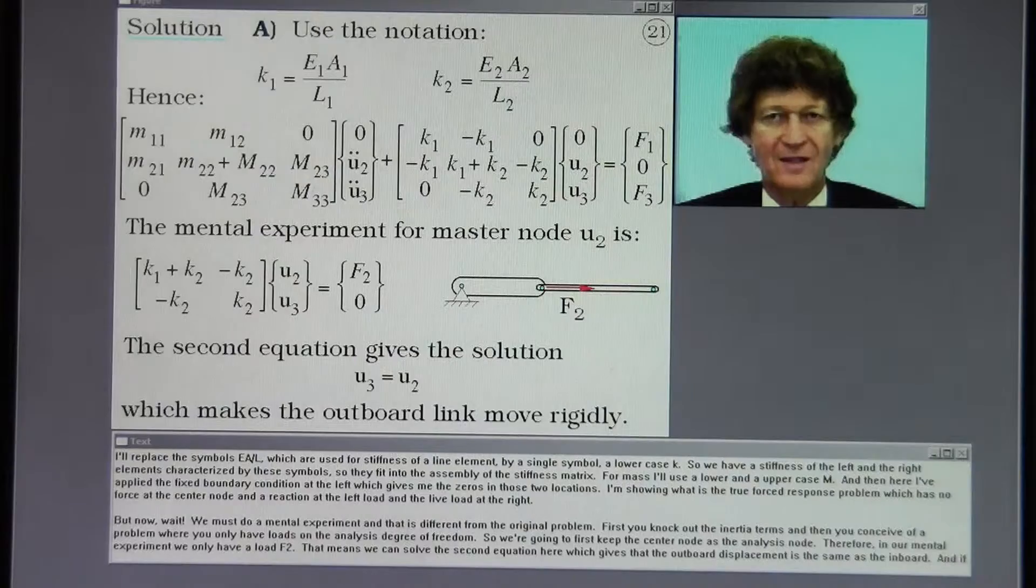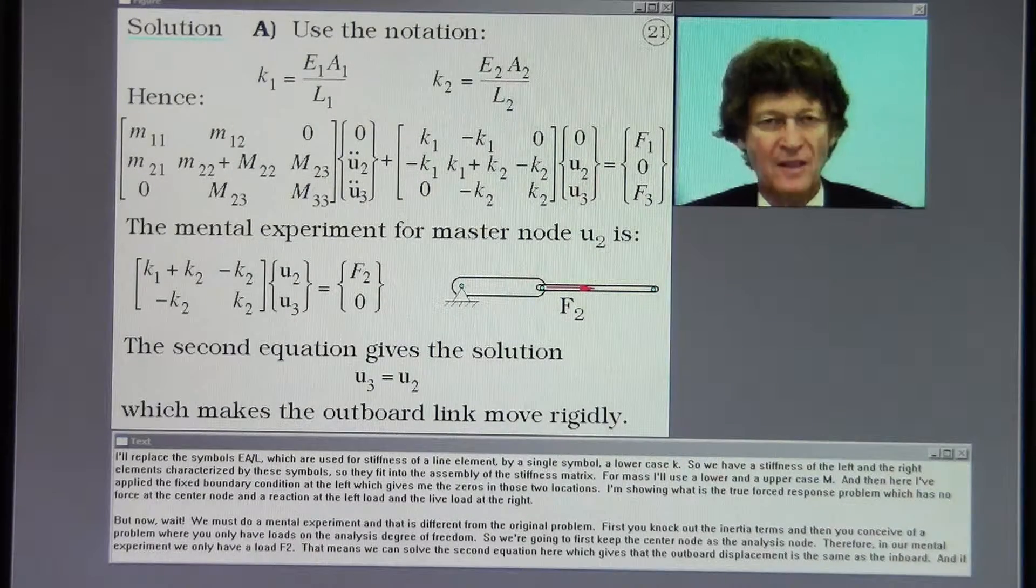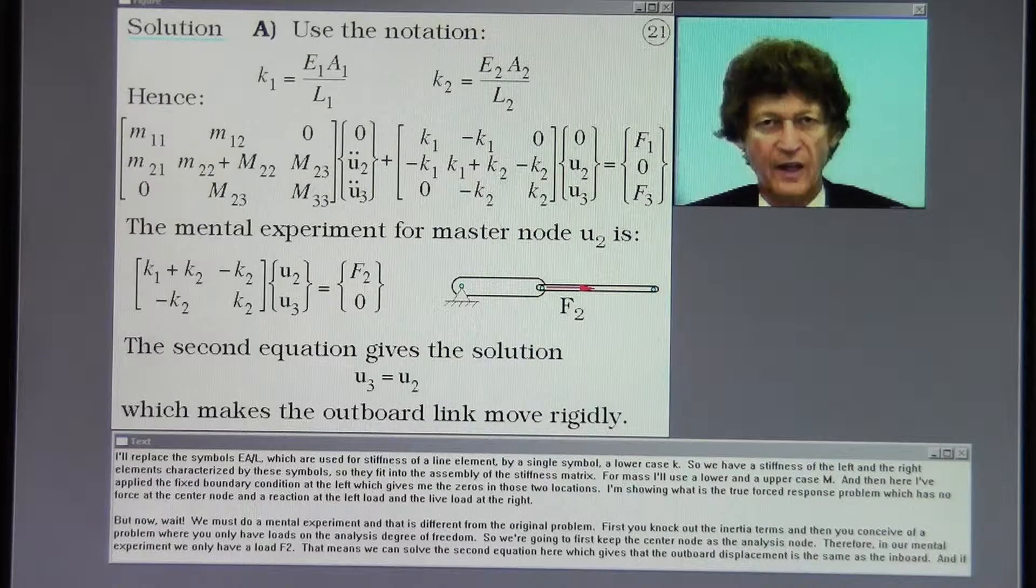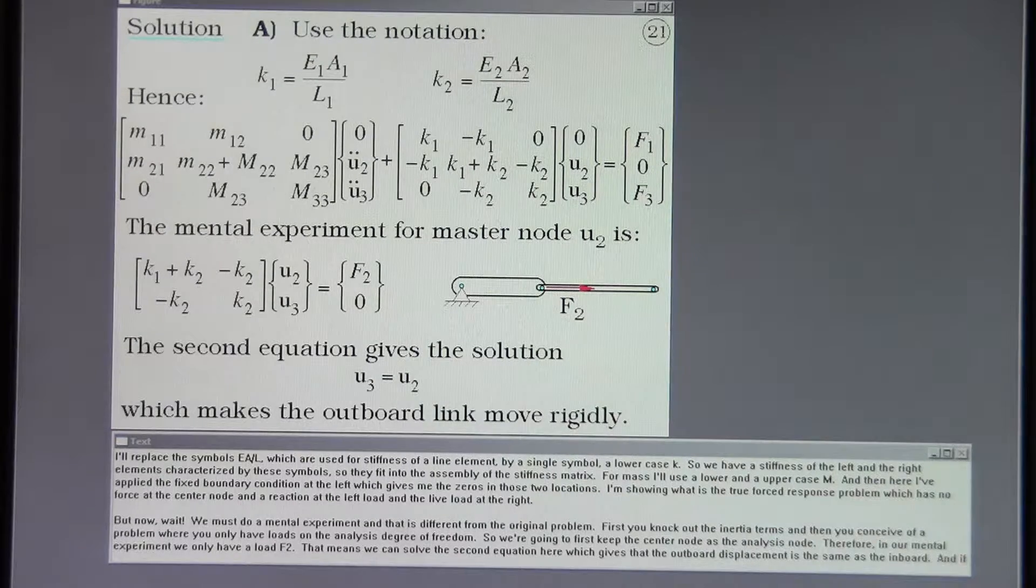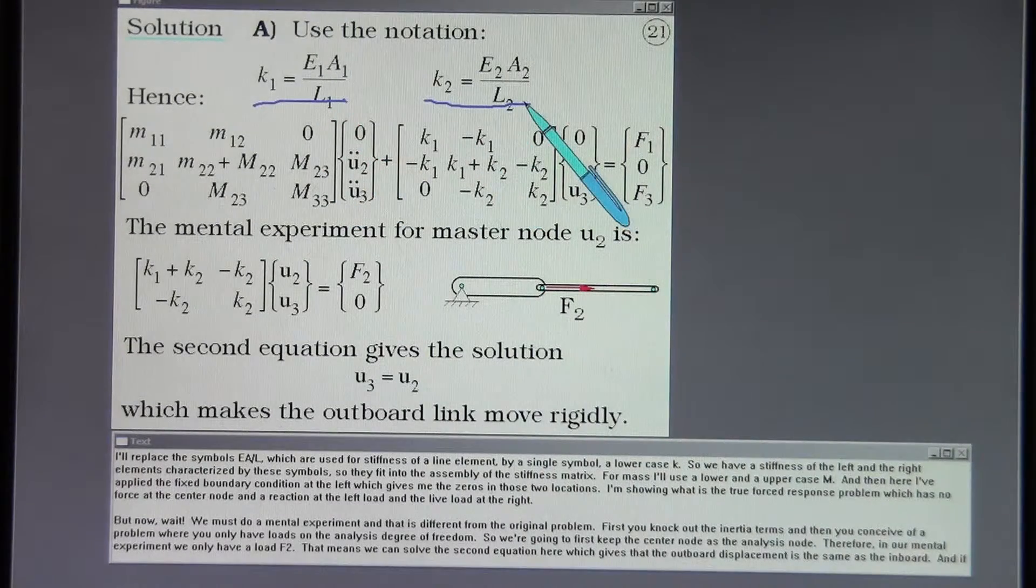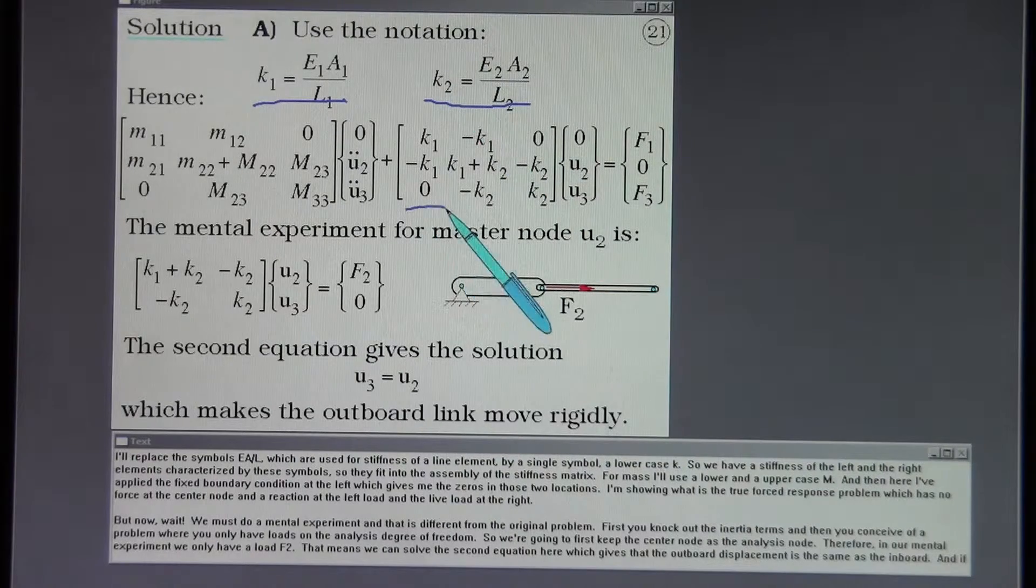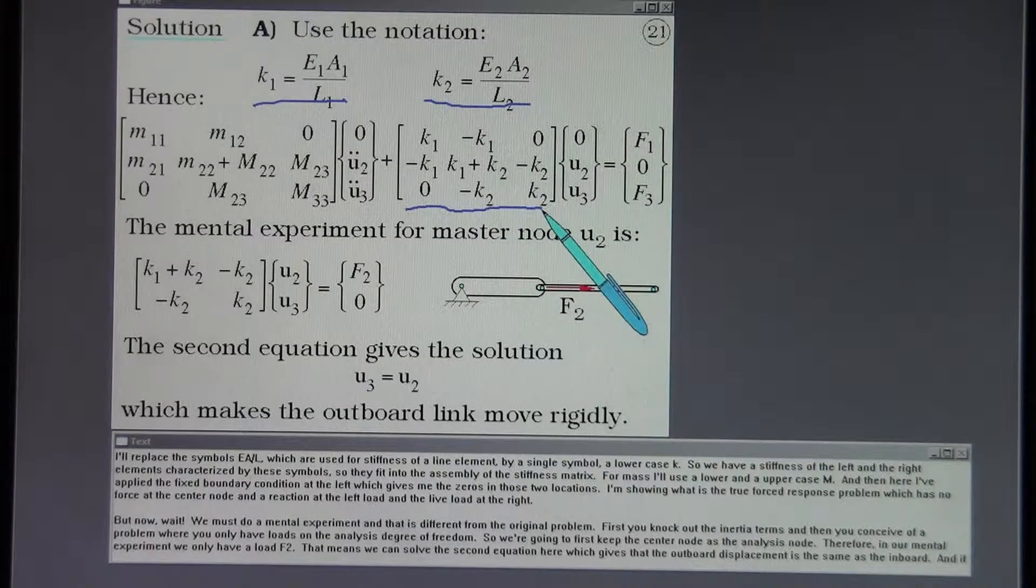I'll replace the symbols EA over L, which are used for stiffness of a line element, by a single symbol, a lowercase k. So we have a stiffness of the left and right elements characterized by these symbols. So they fit into the assembly of the stiffness matrix.